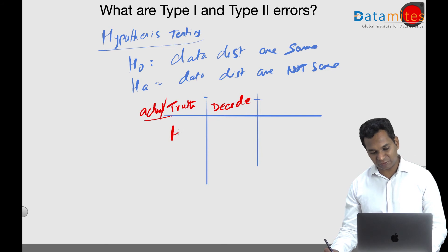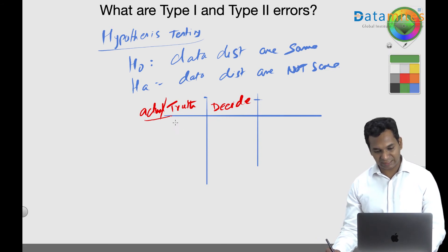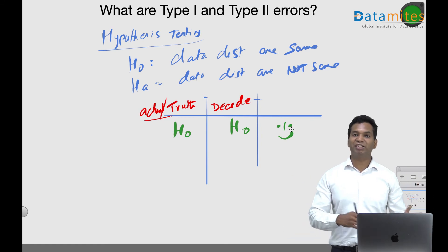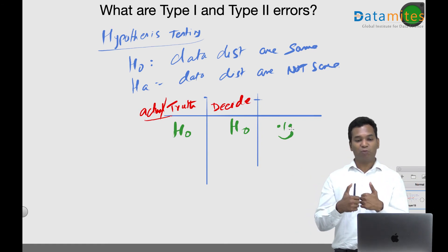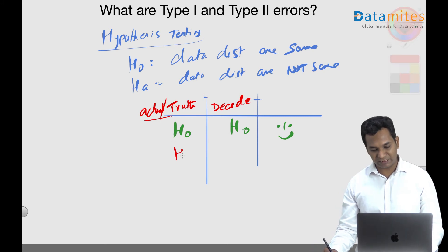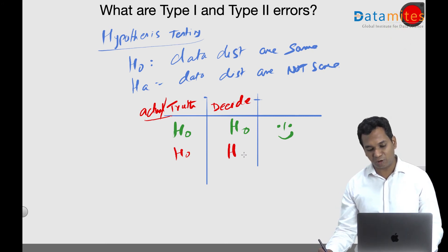But what if the actual is null hypothesis, H0, and you wrongly decided alternate hypothesis, Ha? This is called Type 1 error.